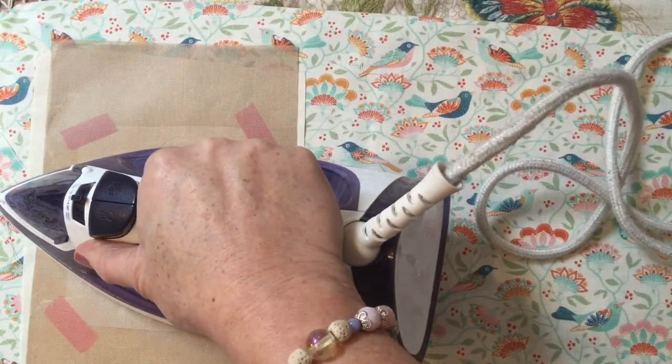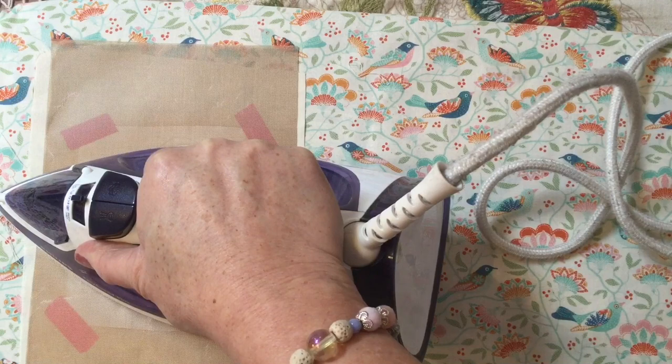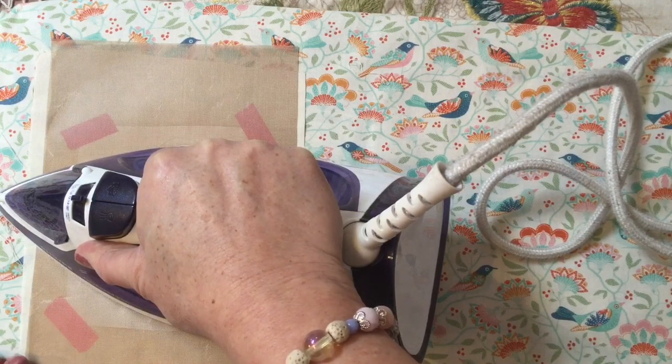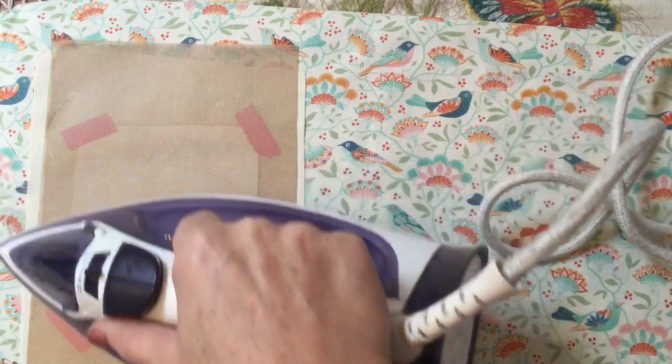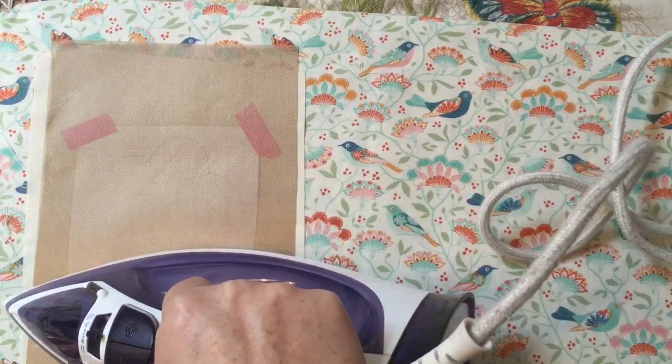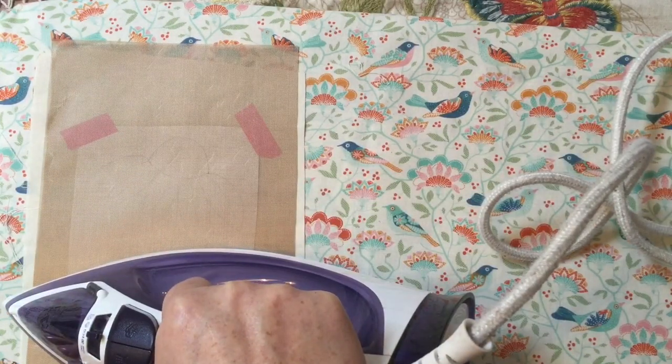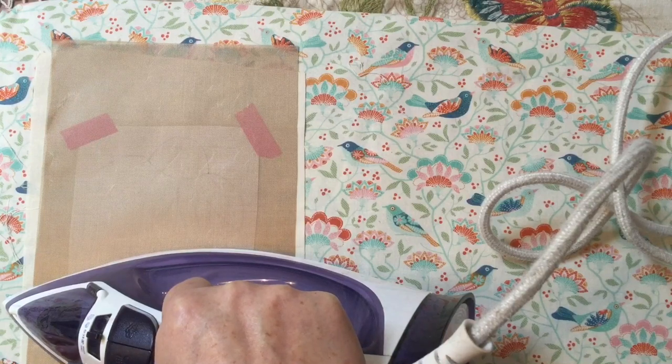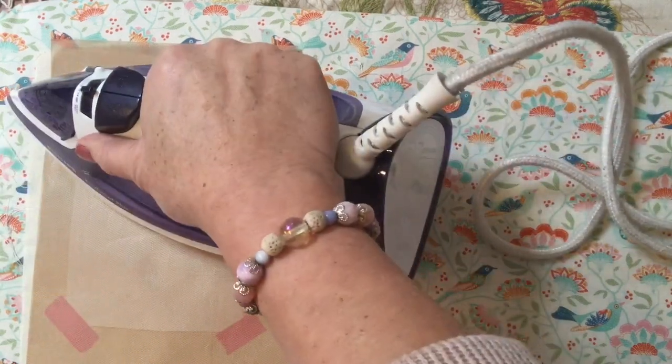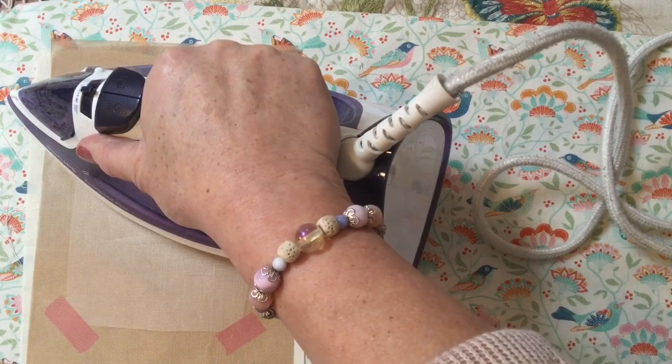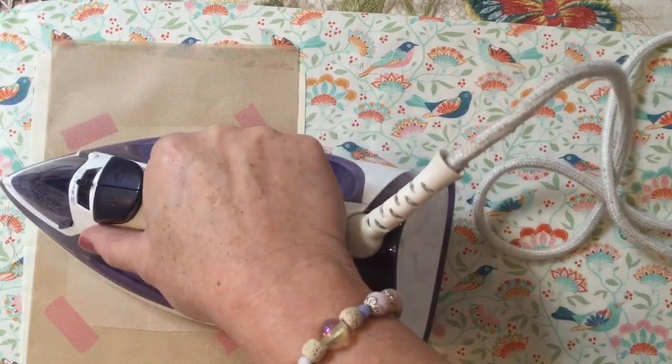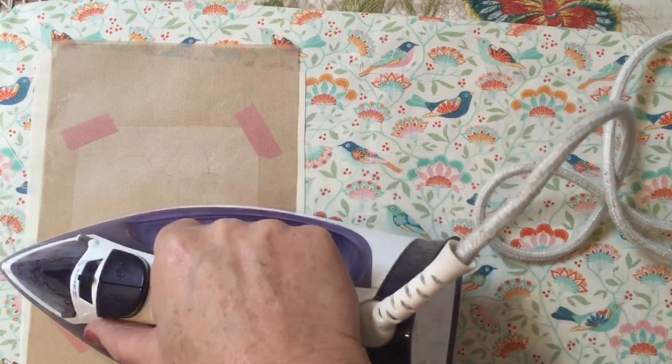And then we count to about five or six in our head or out loud, whichever you prefer. And then you just pick up your iron and move it down onto the next section. And what that does is the heat transfers the ink from the paper onto your fabric, which effectively gives you your iron-on transfer. So it's a great technique. And as I said, it makes doing stitcheries and that sort of thing on dark fabrics so easy because you can easily transfer over your stitching lines.